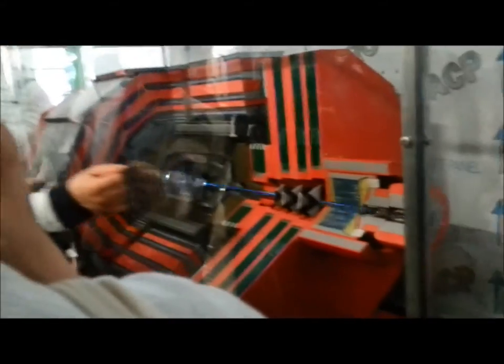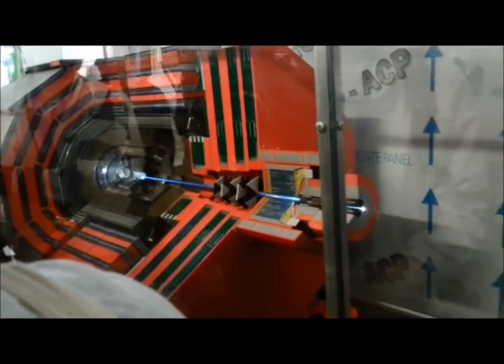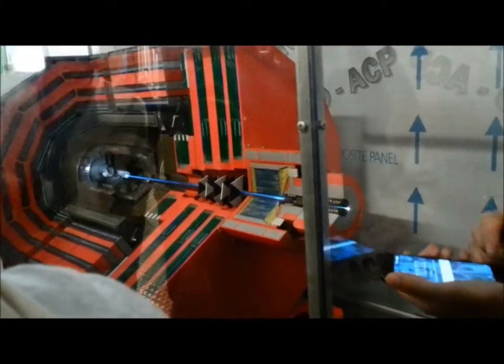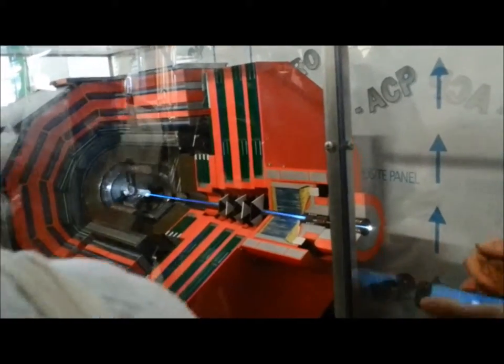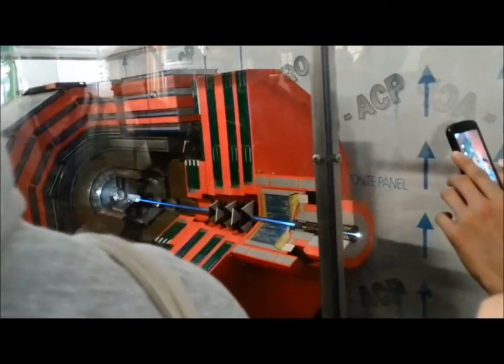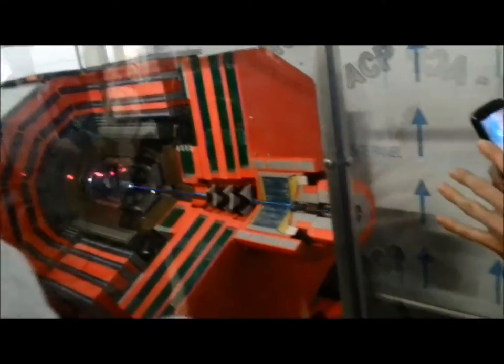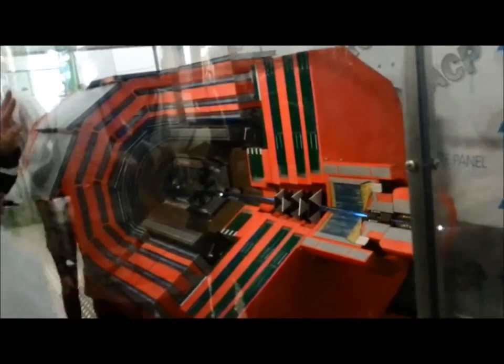There we have the single beam pipe that is passing two beams. We are crossing the beams at the center of the detector. There, somewhere there is the center, if you want to have an idea.